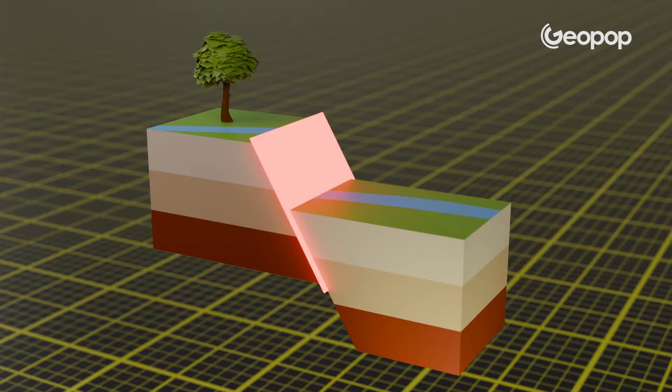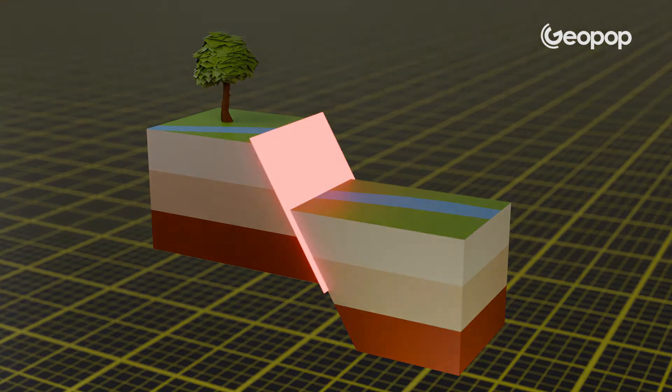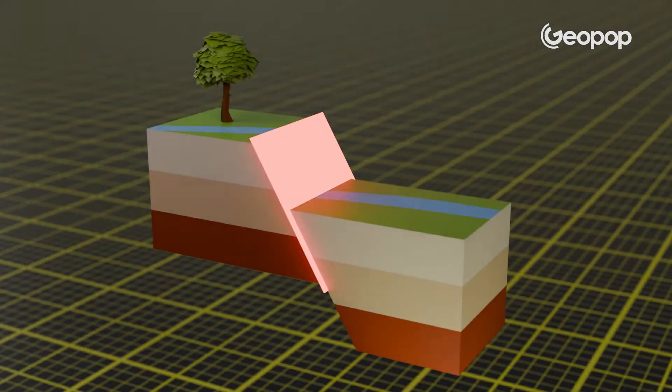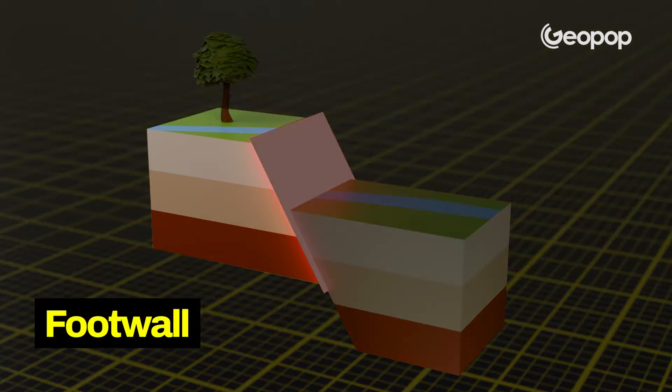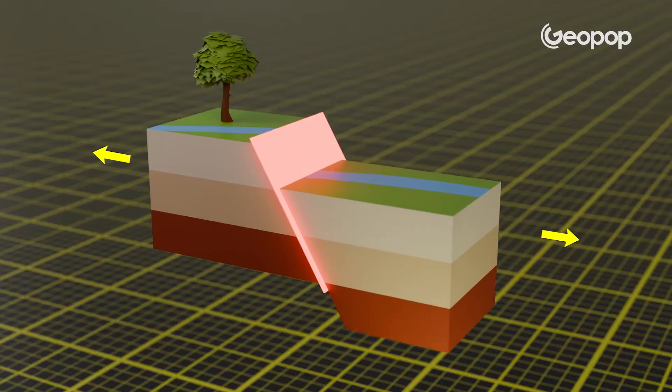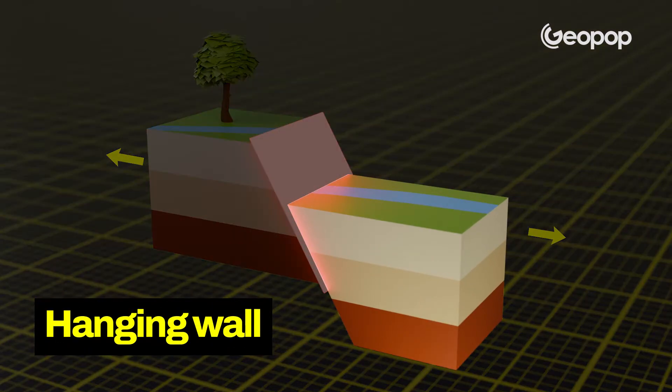Let's look at a diagram — the kind you'd study in high school or university. Every fault has a fault plane, which is the plane along which the rocks split into two distinct blocks. One of the two blocks, called the foot wall, is considered stationary in geology. The block that moves is called the hanging wall.